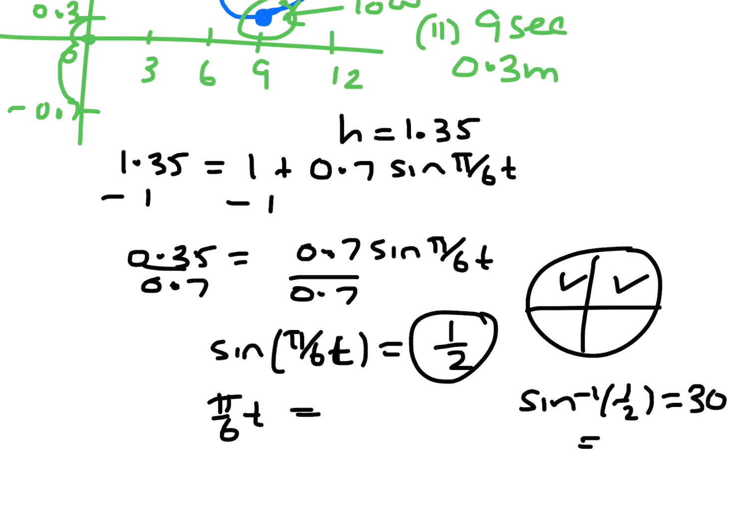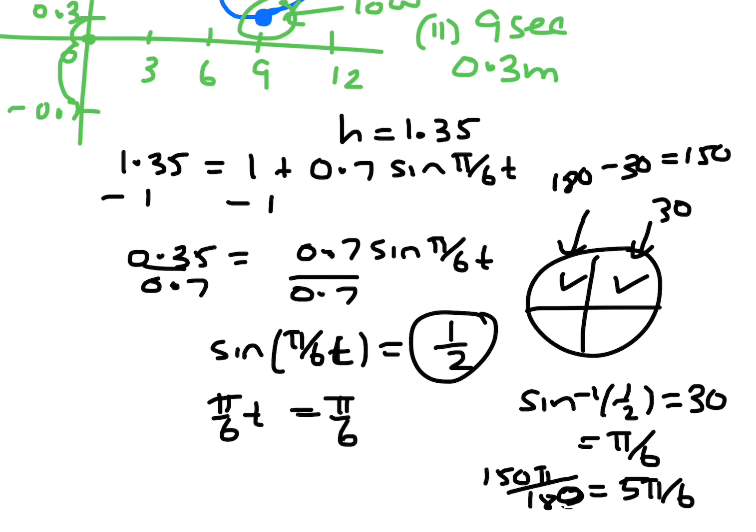And in that quadrant, it will be 30. In that one, it will be 180 minus 30, which is 150. So 150 is 150π on 180, which equals, and 150 on 180 is 5π on 6. So it's going to be π on 6 and 5π on 6.